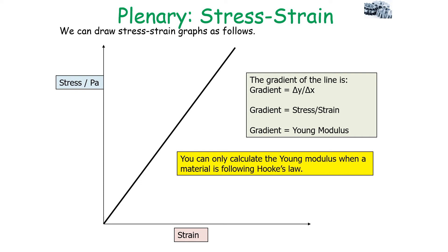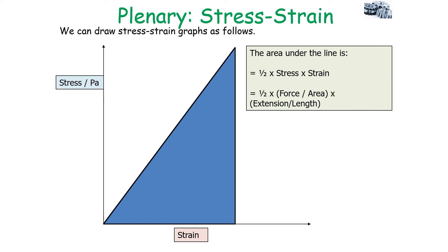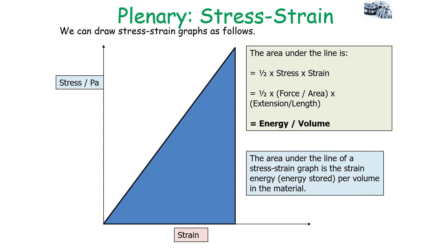Stiff materials tend to have a steep gradient because they have a high Young Modulus. The area under the stress-strain line equals one half times stress times strain, which works out to one half times force over extension times extension over length, equating to energy over volume. So the area under the line of a stress-strain graph is the strain energy — the energy stored per unit volume, or the strain energy in one cubic metre of the material.